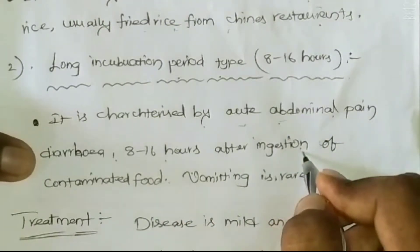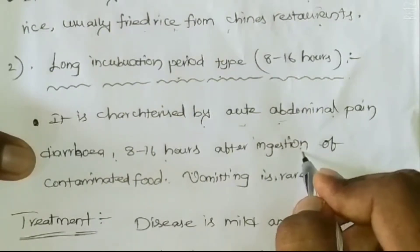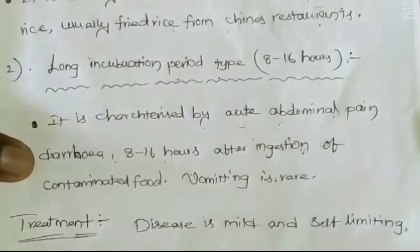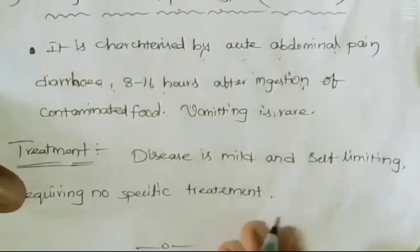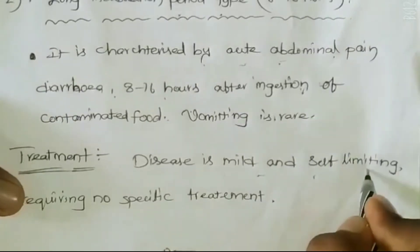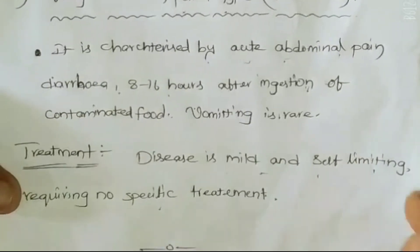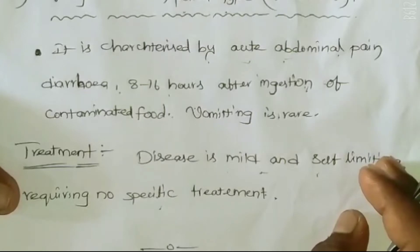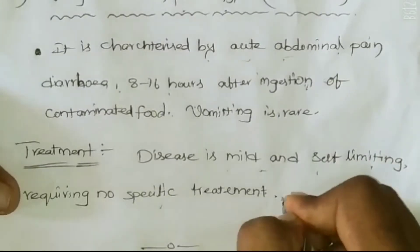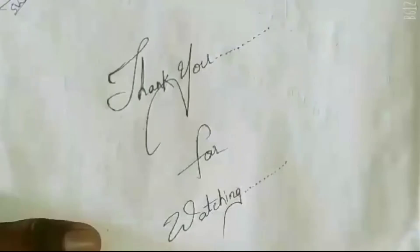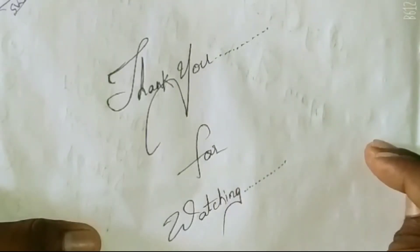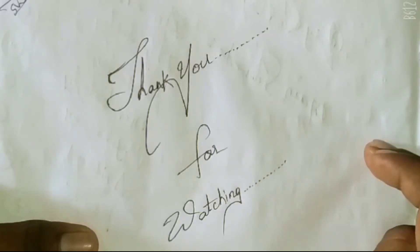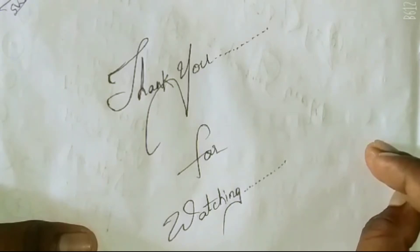If you take in contaminated food, it affects the digestive system and causes diarrhea and vomiting sensation. Treatment for this disease is mild and self-limiting, requiring no specific treatment. If the condition is less severe, it will resolve on its own. If it is severe, treatment is needed. This covers Bacillus cereus and the two types of food poisoning and their treatment.